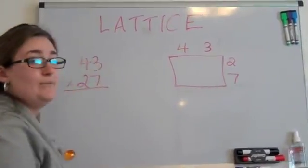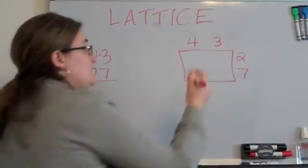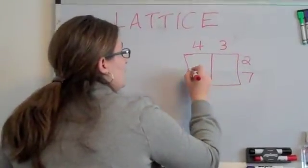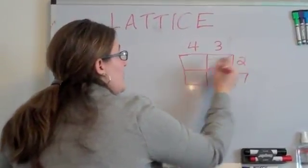Since I have four numbers, I'm going to draw my box in four quadrants and then split each quadrant up diagonally.